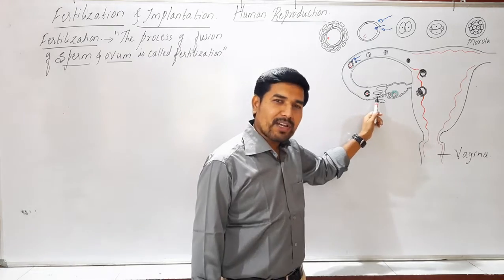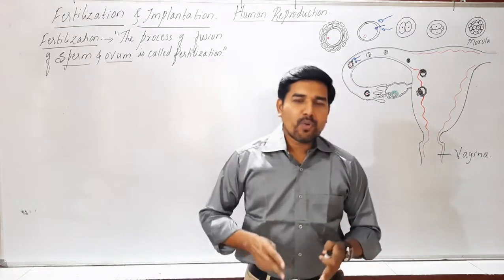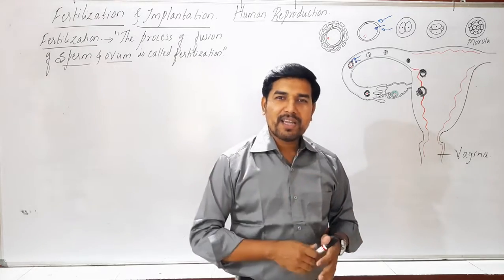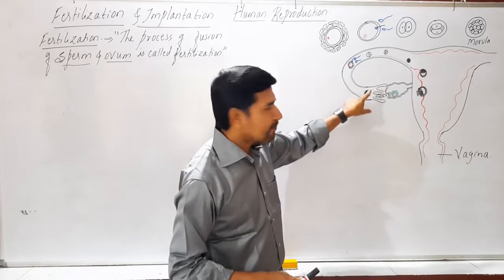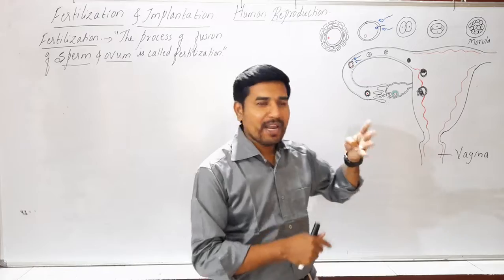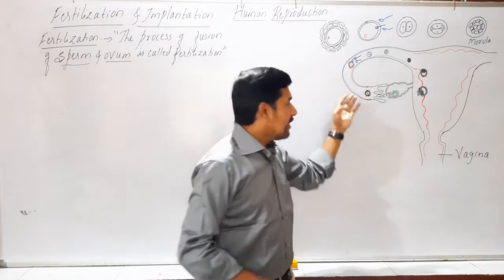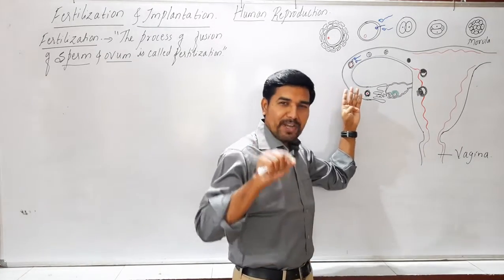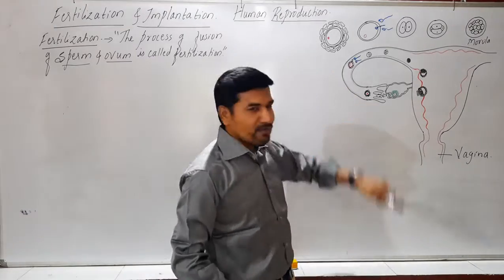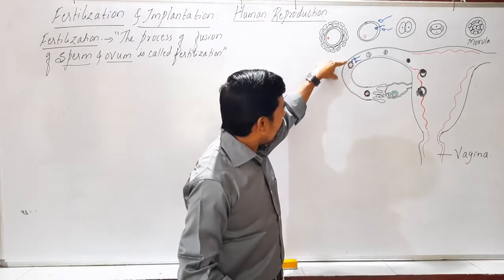The process of release of the ovum from the Graafian follicle is called ovulation, which occurs exactly on the 14th day of the menstrual cycle. The ovum is not released alone — it is covered by zona pellucida as well as corona radiata cells. When the ovum is released during ovulation, it is picked up by the finger-like projections of the fallopian tube called fimbriae. The ovum is then transported to the upper part of the fallopian tube through the ciliated epithelium lining the fallopian tube.